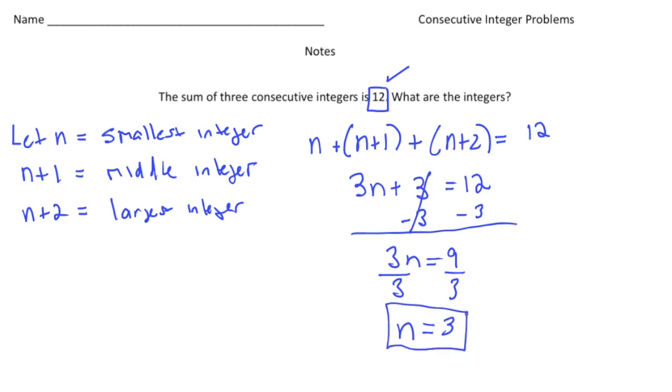So that right there is the first important part. So we finally know what n is now. So what I can do is I can take this n and plug it in for every n over here. So the first integer is going to be n, which is 3. The second one is going to be n plus 1, so 3 plus 1 is 4. And finally, 3 plus 2 gives us 5. If you notice, they're consecutive, and 3 plus 4 is 7, and 7 plus 5 gives us 12. And that's what we want.